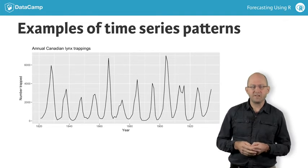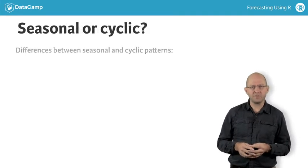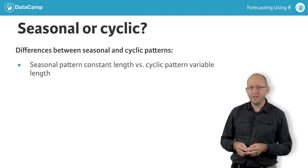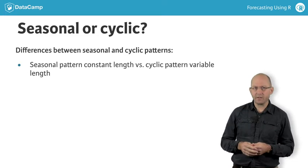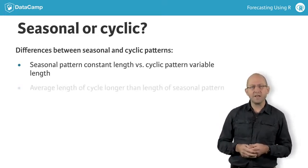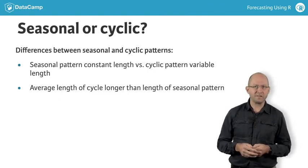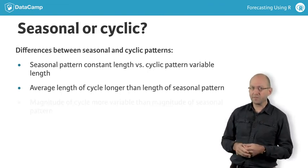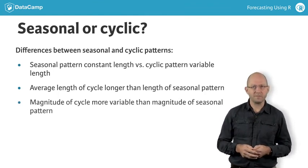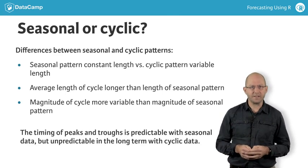We need to distinguish between seasonal and cyclic patterns, as very different time series models are used in each case. To summarise: seasonal patterns have constant length, while cyclic patterns have variable length. If both exist together, the average length of the cyclic pattern is longer than the length of the seasonal pattern. The size of the cycles tends to be more variable than the size of the seasonal fluctuations. As a result, it's much harder to predict cyclic data than seasonal data.